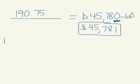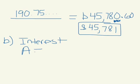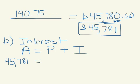So part b says to find your amount of interest. This is the same thing from simple interest: A is equal to P plus I. Your future value, which was $45,781, is equal to the principal, how much money you put in, plus your interest.